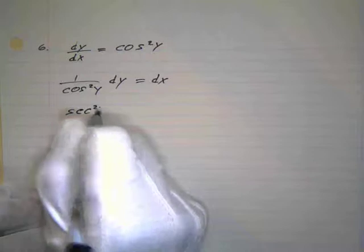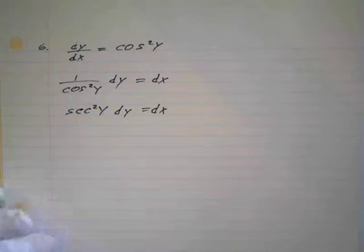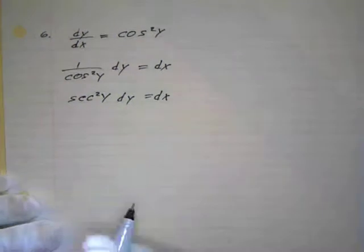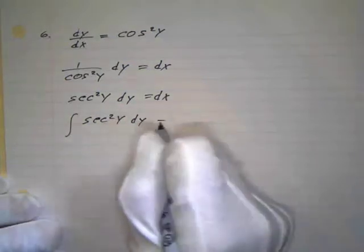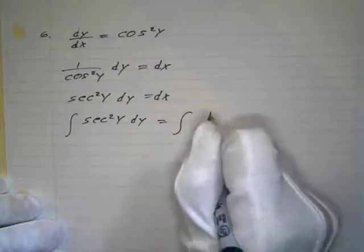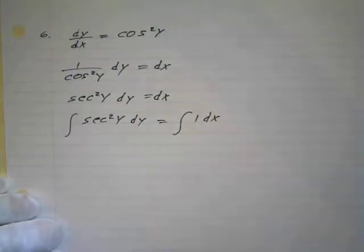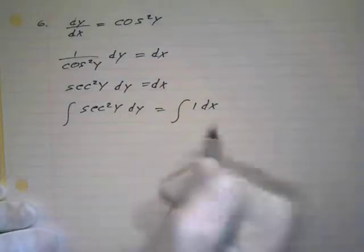From there we know that one over cosine is the same thing as secant, so we write that as secant squared y dy equals dx. Then we'll take the integral of both sides: the integral of secant squared y dy equals the integral of dx.